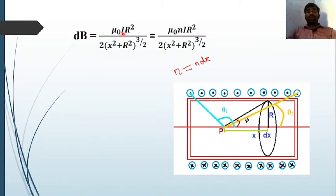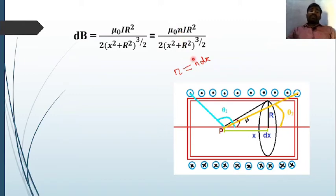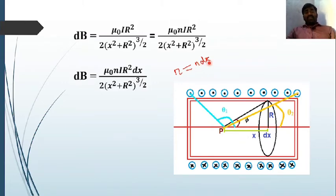For a circular coil carrying current, the magnetic field at point P is dB = μ₀Ir² / [2(x² + r²)^(3/2)]. Since the solenoid has n turns per unit length rather than a single turn, we rewrite this as dB = μ₀nIr² / [2(x² + r²)^(3/2)]. For a small element dx, the number of turns is n·dx, so dB = μ₀nIr²·dx / [2(x² + r²)^(3/2)].